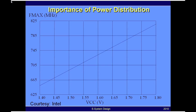In a transistor, we always define a wall that we call the reliability wall. This represents the maximum voltage you can allow across the gate oxide of a transistor, and that voltage defines the maximum electric field allowed in that gate oxide. In this example, the maximum allowable voltage is 1.65 volts — if you exceed 1.65 volts, you would cause the breakdown of the transistor.